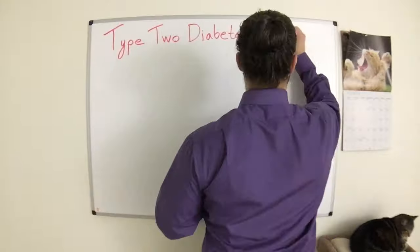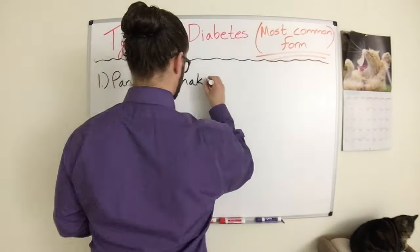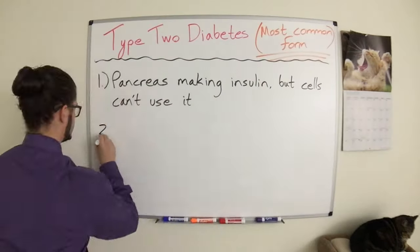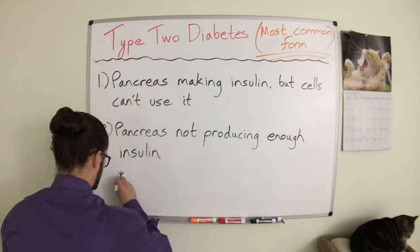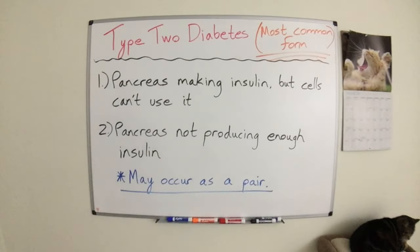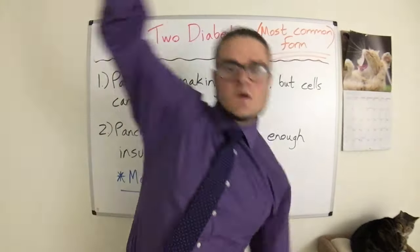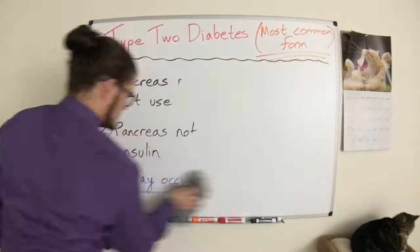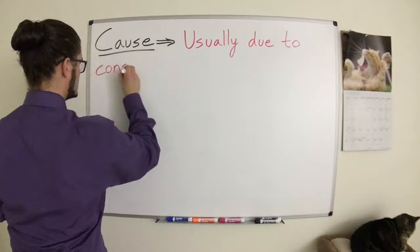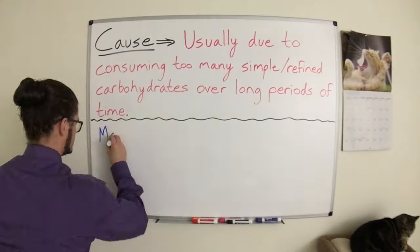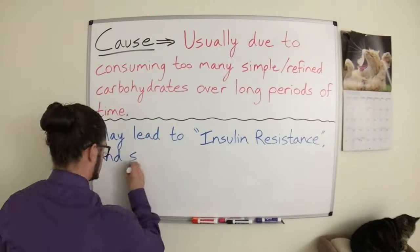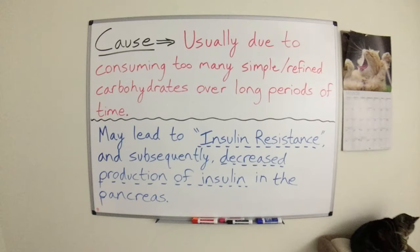On the other hand, a diagnosis of type 2 diabetes means one of two things: either your pancreas is making insulin but your cells can't use it, or your pancreas just isn't making enough insulin. Type 2 diabetes is usually caused by consuming too many simple carbohydrates like sugar, which can lead to insulin resistance and ultimately decrease production of insulin in the pancreas.